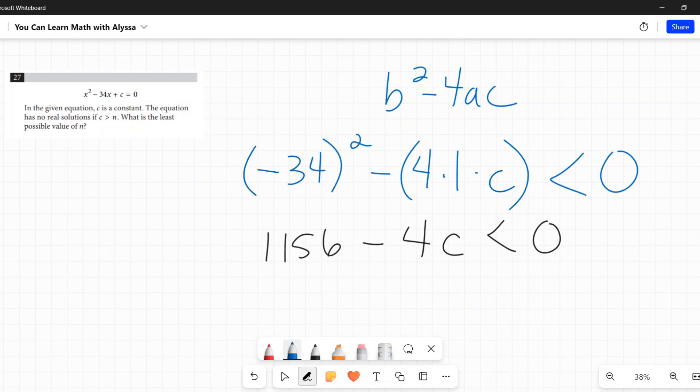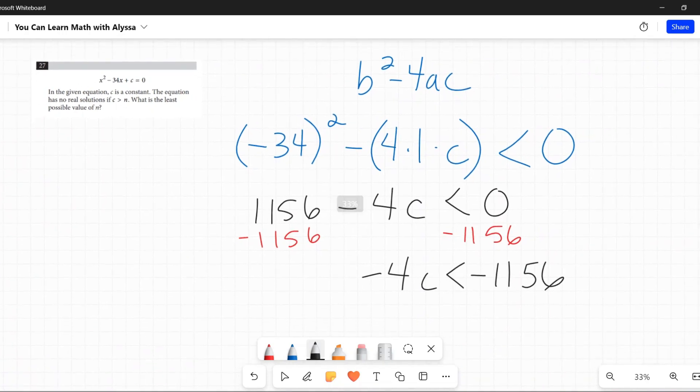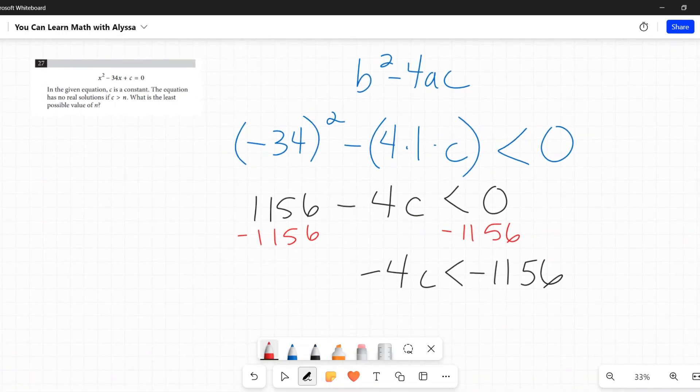Now to solve for c, I'm going to subtract 1156 from both sides, and I get -4c < -1156.